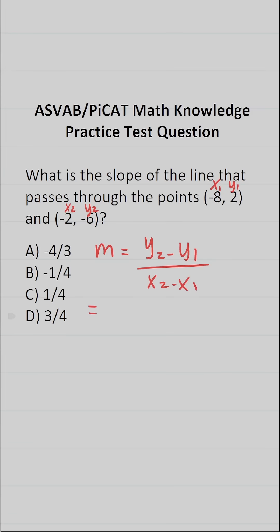All right, let's go ahead and plug those values in and solve. Again, y2 is right here. It's -6 minus y1, which is 2, over x2. It's right here. It's -2 minus x1, which is -8.